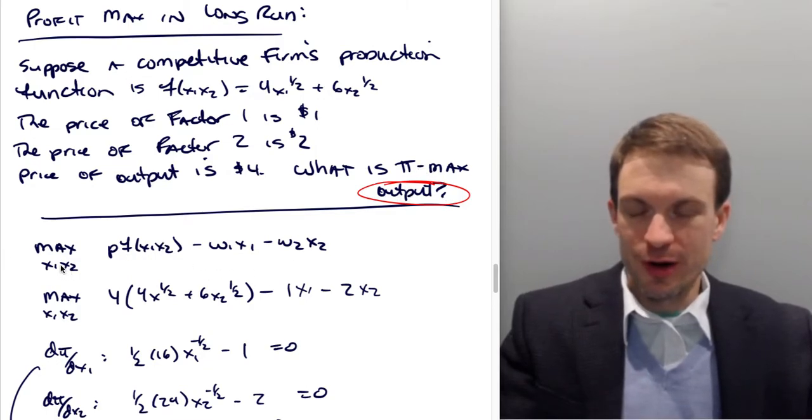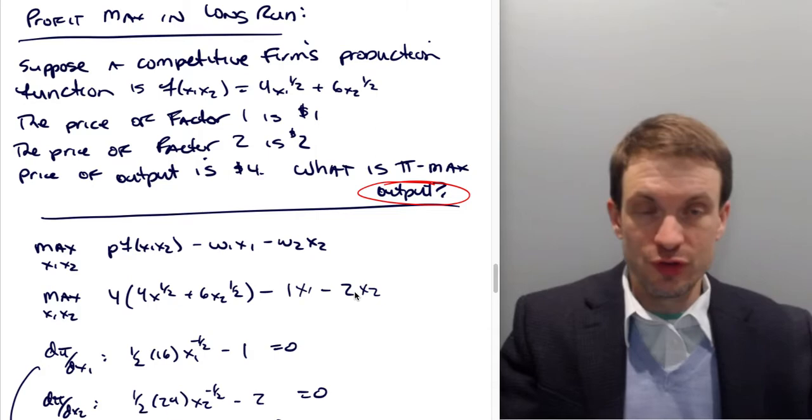We'll set up our profit maximization, choosing x1 and x2. So it's going to be output price times the production technology minus omega 1 x1 minus omega 2 x2. Plugging in the values we have: 4 times 4x1 to the one half plus 6 times x2 to the one half, minus x1 minus 2x2.